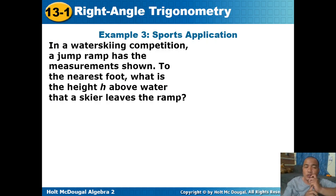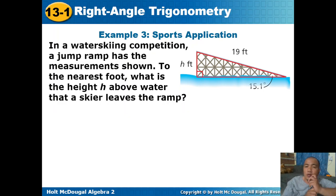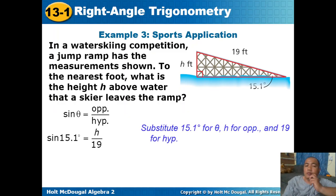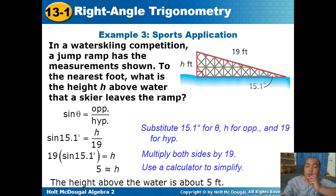Sports application: in a water skiing competition, a jump ramp has an angle of 15.1 degrees and a length of 19 feet, which is the hypotenuse. Find the height h above the water that the skier leaves the ramp. The sides involved are the opposite side and hypotenuse, so we use the sine function. Sine 15.1 degrees equals h over 19. Multiplying both sides by 19: h equals sine 15.1 degrees times 19. Using a calculator, the height is approximately 5 feet.